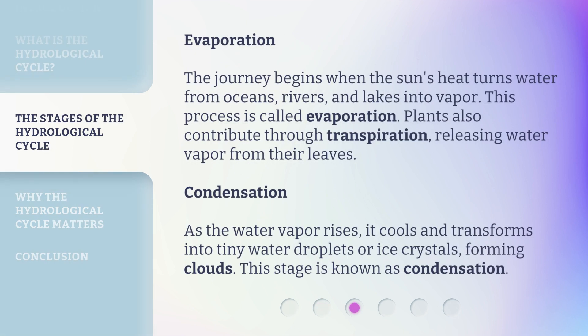Evaporation. The journey begins when the sun's heat turns water from oceans, rivers, and lakes into vapor — a process called evaporation. Plants also contribute through transpiration, releasing water vapor from their leaves.